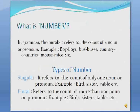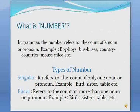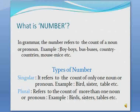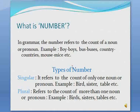So let's understand what 'number' is in grammar. The number refers to the count of a noun or pronoun. Examples: boy/boys, bus/buses, country/countries, mouse/mice, etc. Basically, number refers to the count of a noun. When we see the pair of words 'boy' and 'boys,' the word 'boy' represents a single count and 'boys' represents more than one.